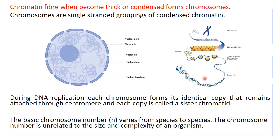During DNA replication, when the cell divides, every cell doubles its genetic material or DNA, and each copy of each DNA remains attached at its centromere. That's why when the cell divides, the chromosomes can be visualized, and every chromosome has its identical copy attached through the centromere. These identical copies are called sister chromatids.